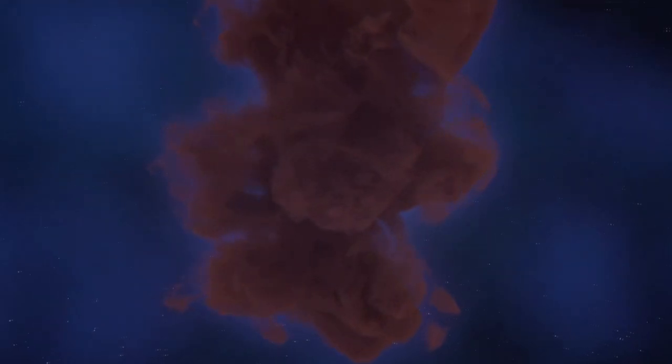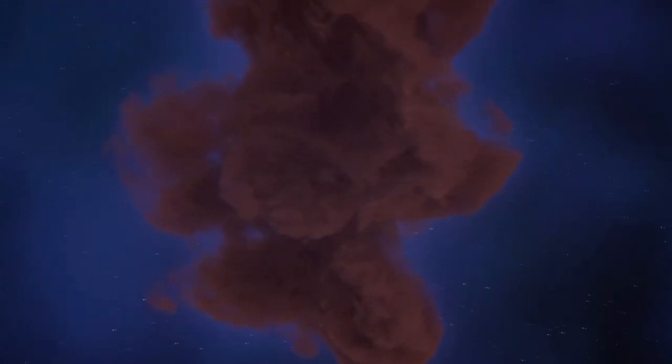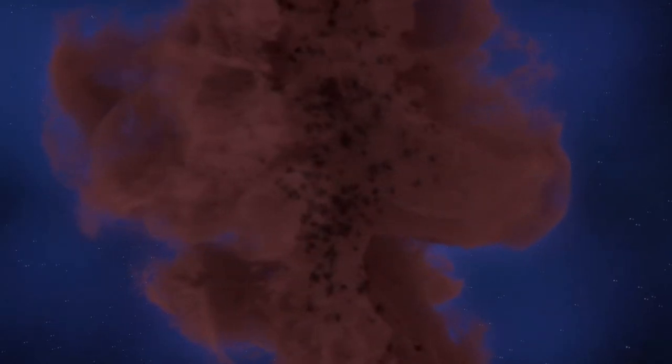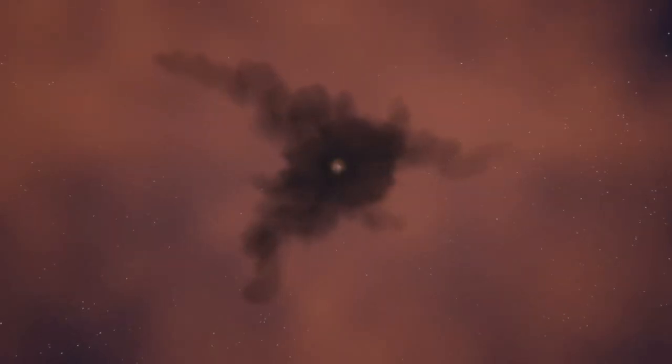This region, known as a protostar, was the embryonic stage of what would become our sun. As more material accumulated, the core temperature of the protostar skyrocketed. When it reached about 10 million degrees Celsius, nuclear fusion ignited.